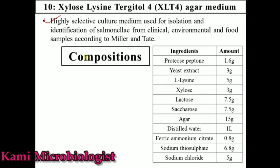What is XLT4 media? It is actually a highly selective media. Highly selective media means this media is specially used for the identification of Salmonella species, like Salmonella gallinarum, Salmonella typhimurium, and Salmonella pullorum. These types of Salmonella species can easily grow on this media — some of them are sugar fermenters and some are non-sugar fermenters. It is used for the isolation of Salmonella, especially from environmental, food, or clinical samples. This media was first discovered by scientists named Miller and Tater.